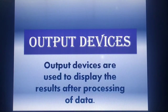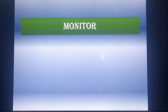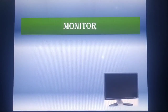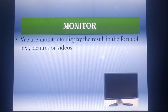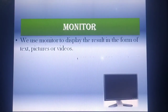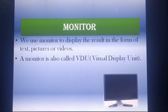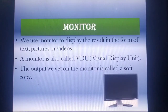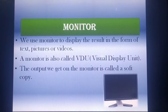Today let's discuss some output devices, and our first output device is the monitor. We use a monitor to display the results in the form of text, pictures, or videos. The monitor is also known as VDU, which stands for Visual Display Unit, and the output we get on the monitor is called soft copy. So monitor is our first output device.